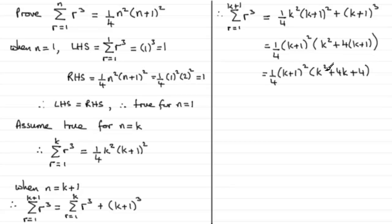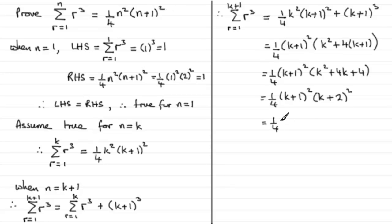Now, k squared plus 4k plus 4 factorises as k plus 2, all squared. So I can write that as a quarter times k plus 1, all squared, multiplied by k plus 2, all squared. This is what we wanted — wherever there was an n in the original formula it's been replaced with k plus 1, giving a quarter times k plus 1 squared times k plus 1 plus 1 all squared.